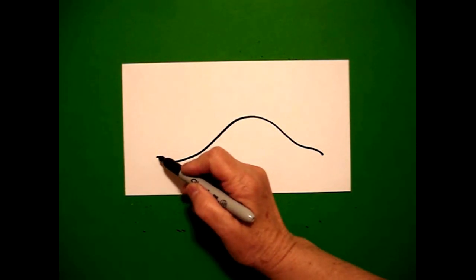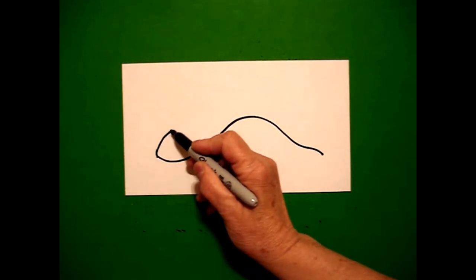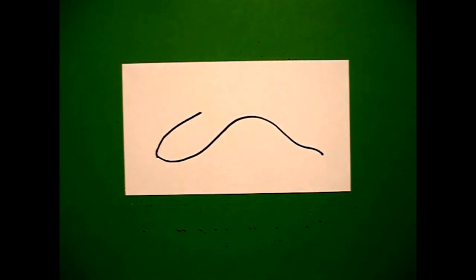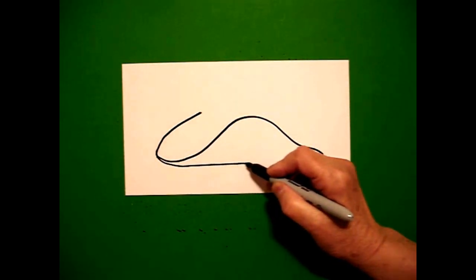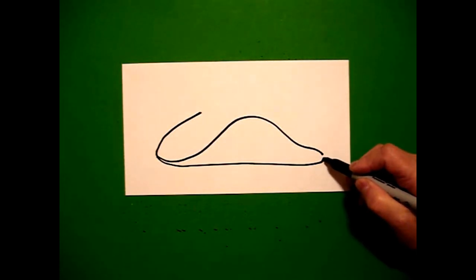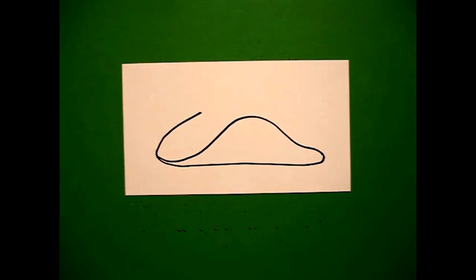Come back to the dot and draw a curve line up and leave it floating. Come back to the dot again on the left and draw a straight curve line up over to the right.